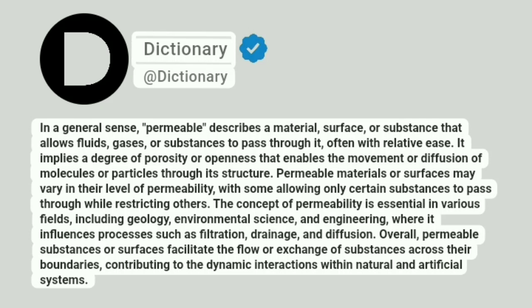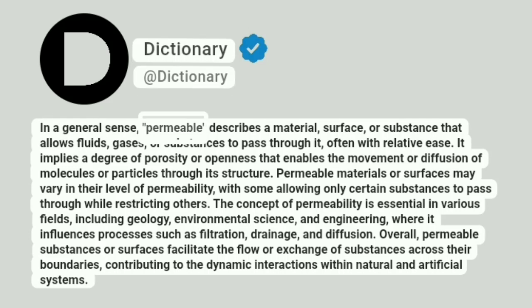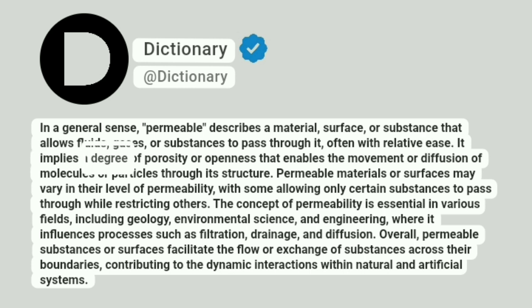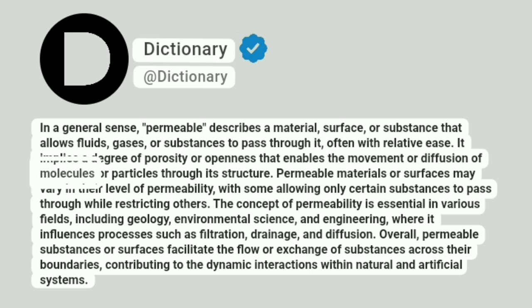Dictionary. Addictionary. In a general sense, permeable describes a material, surface, or substance that allows fluids, gases, or substances to pass through it, often with relative ease. It implies a degree of porosity or openness that enables the movement or diffusion of molecules or particles through its structure.